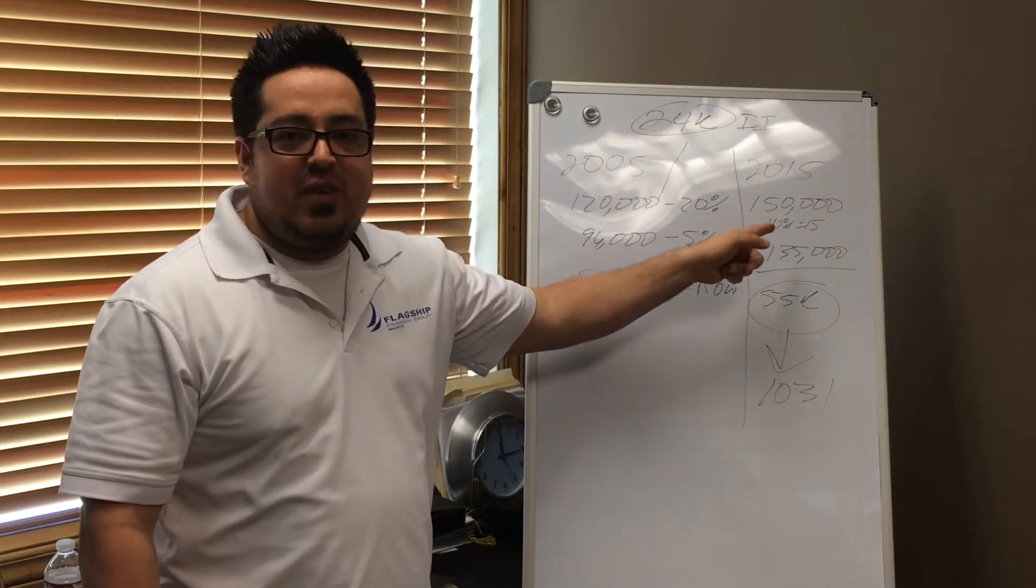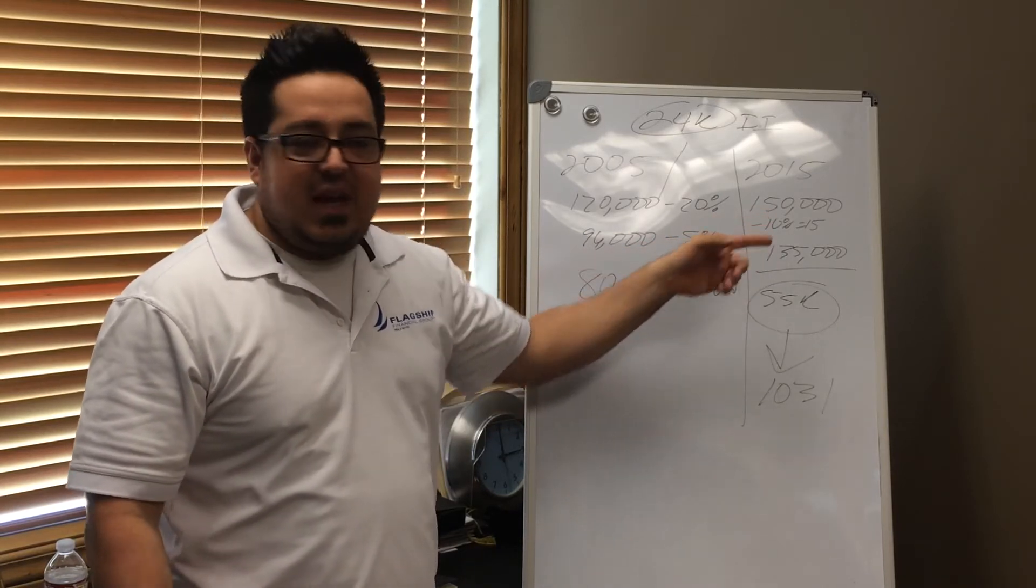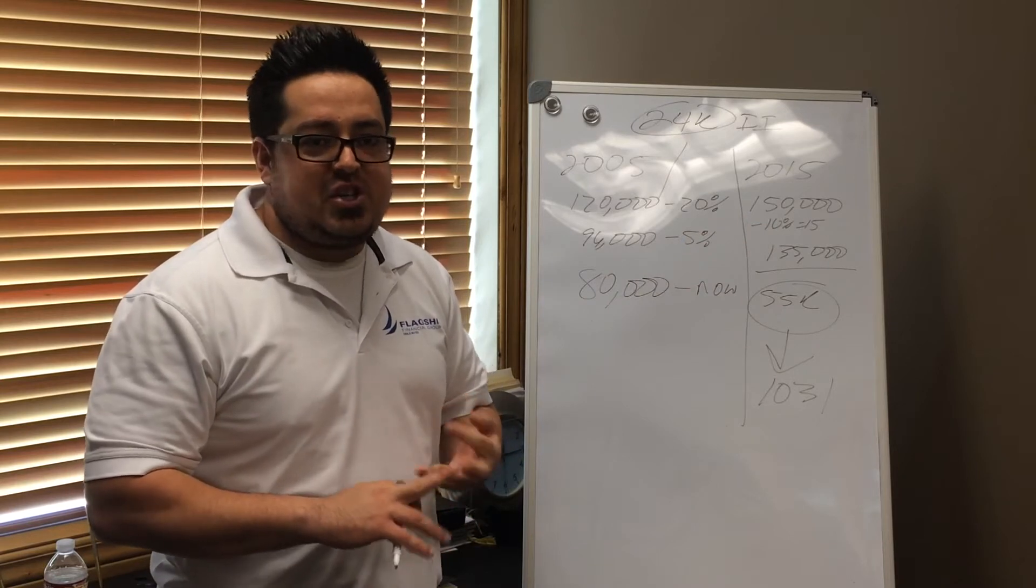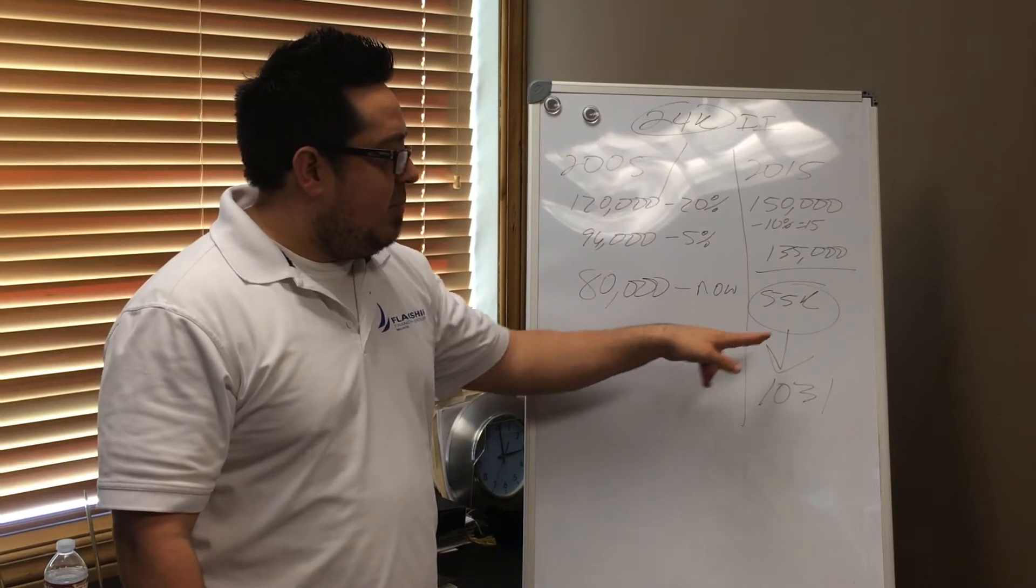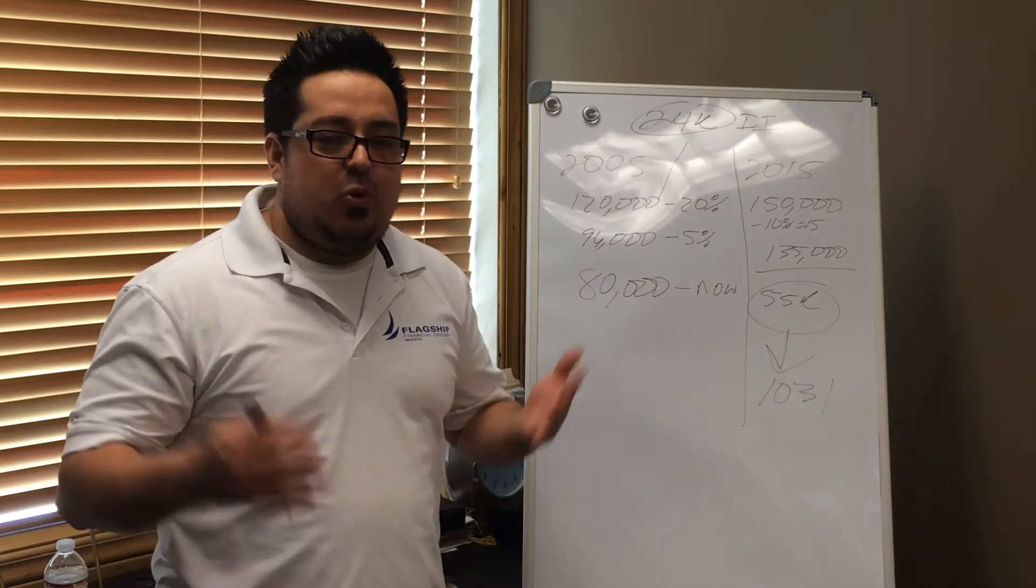So if you sold it for $150,000, minus 10% for seller-paid closing costs, concessions, and real estate, you're going to net $135,000 for this example. Now why I'm bringing this up is you have $55,000 that you roll up.